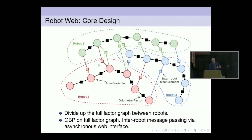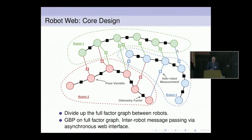That's just the full factor graph. You could define it, upload it to a server, and solve it with whatever factor graph solver you want. But we want to solve it in a distributed way between all of these devices using message passing. So we draw a dotted line around the parts of the factor graph that each robot owns — robot one owns all of its pose variables, its odometry variables, and the factors relating to its own sensors and measurements.